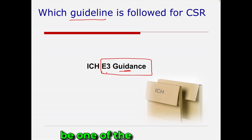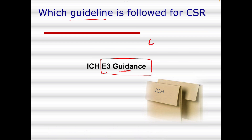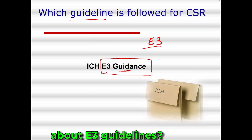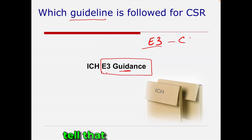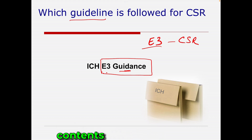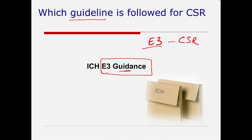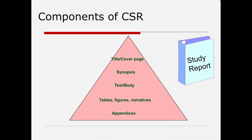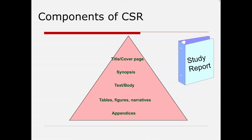This is also one of the key questions in interviews. If someone asks about E3 guidelines, you can explain that they describe how to write a CSR and that the table of contents is provided in the E3 guidelines. So remember the E3 guideline. As per E3, the components of a CSR should be the title, cover, and synopsis.